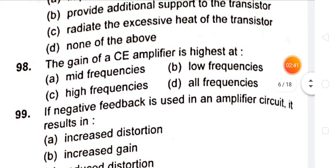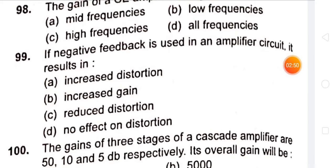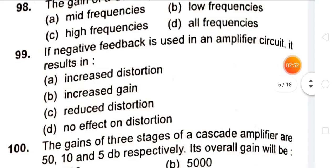The gain of a CE amplifier is highest at mid frequencies. If negative feedback is used in an amplifier circuit, it results in reduced distortion.